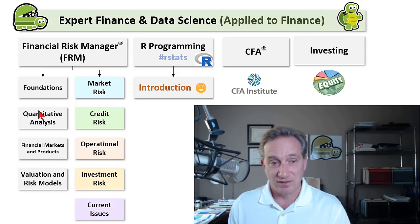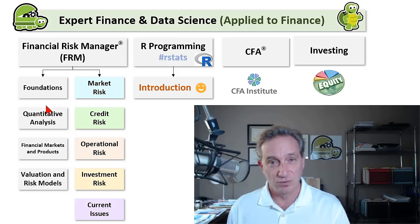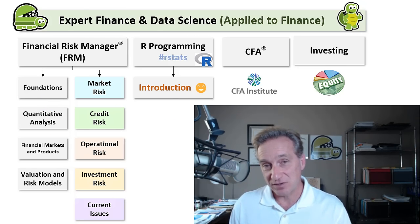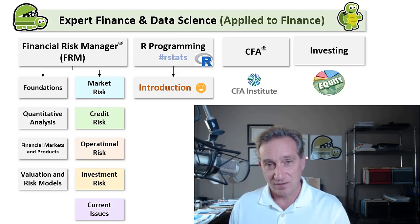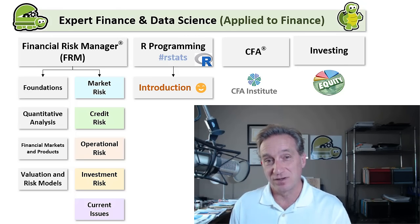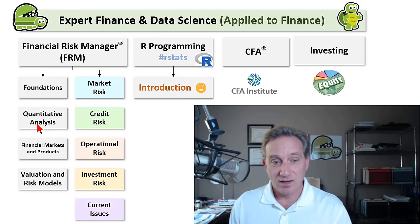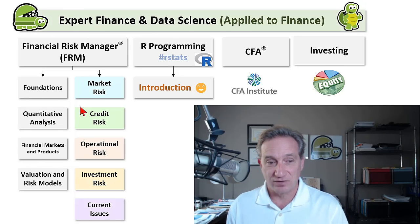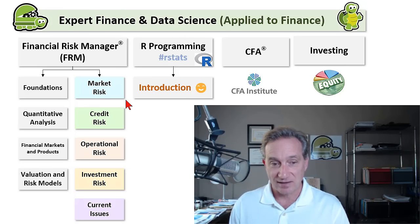Part One collectively of the FRM can be thought of as the products, tools, and markets used by a financial professional. This would be of interest if you're either working in finance or would like to become a professional in finance, especially if you're a student of professional finance. Part One is a prerequisite, and many of those concepts are used in Part Two of the FRM.